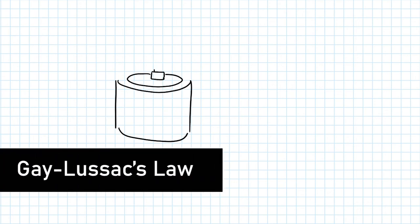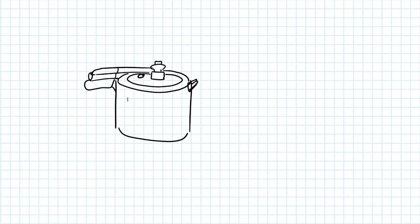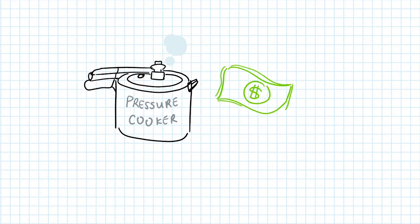Have you ever used a pressure cooker to make your lamb stew or that juicy pulled pork? If you own a pressure cooker, you would know that it saves you loads of time and money. And here's to physics to explain why.